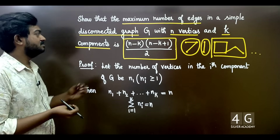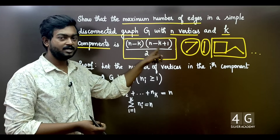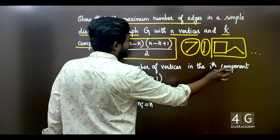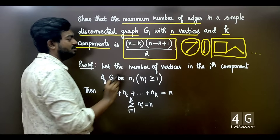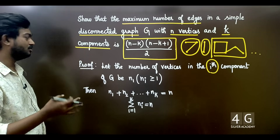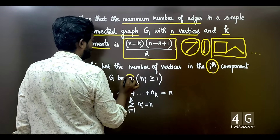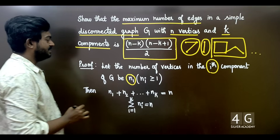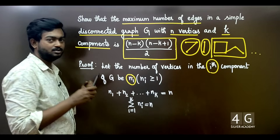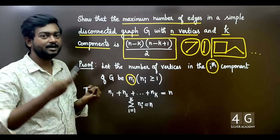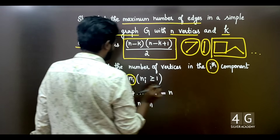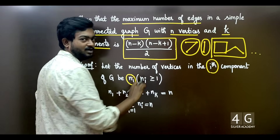Let the number of vertices in the i-th component of G be ni. There are k components: first component, second component, third component. The condition is that ni is greater than or equal to 1 — at least one vertex per component. For example, if the i-th component has vertices 1 and 2, then ni = 2, which is ≥ 1.